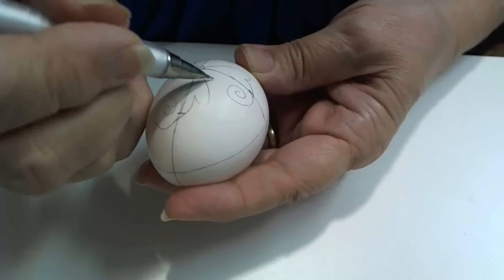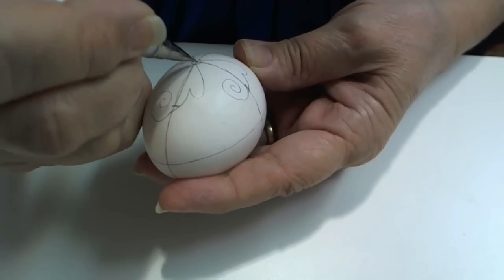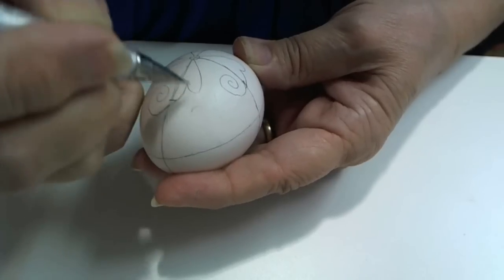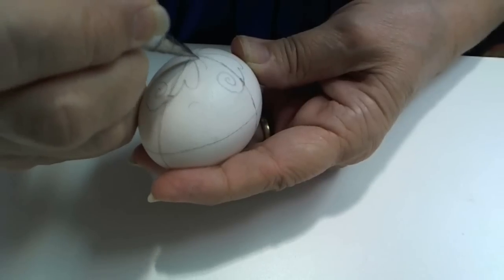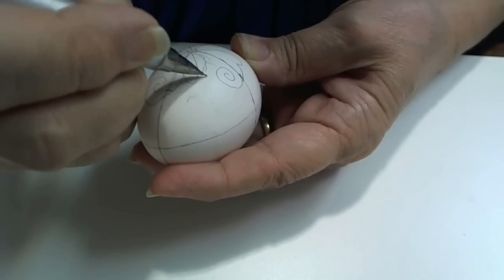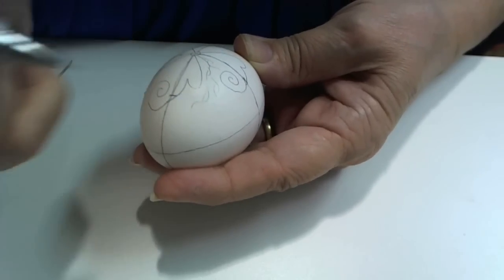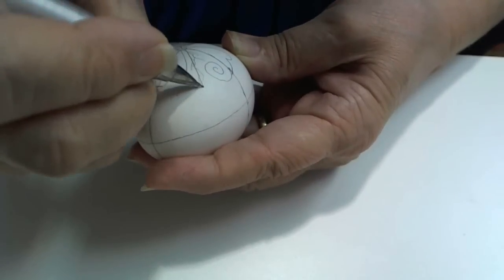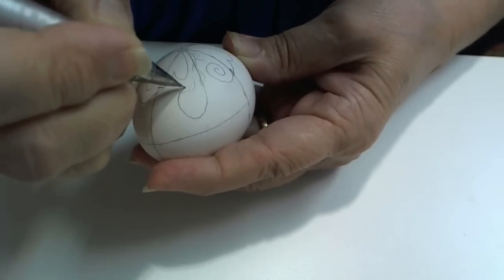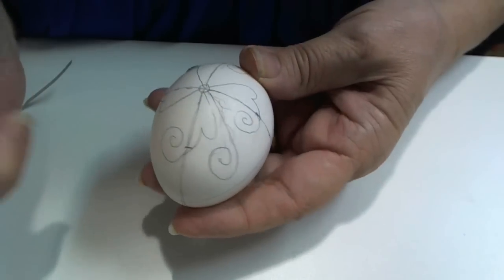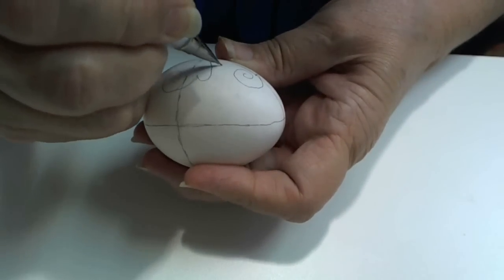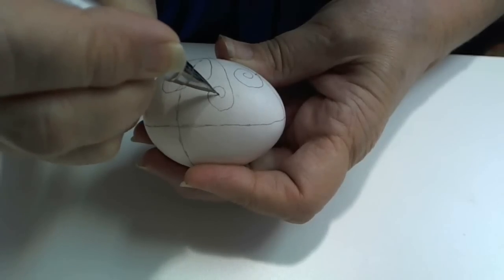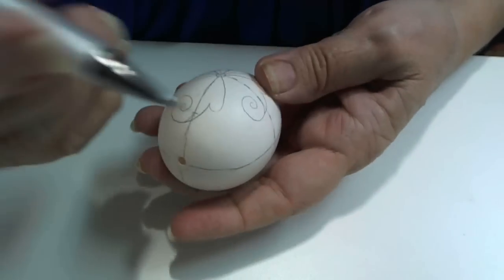I have space here. I can either decide to make another long curly cue or I can decide to make leaves in this area. But this time I think I will just make a curly cue in between these flower petals.